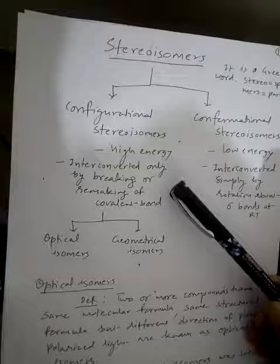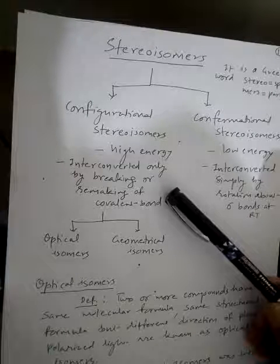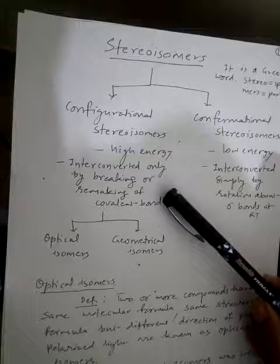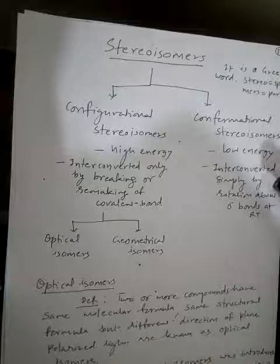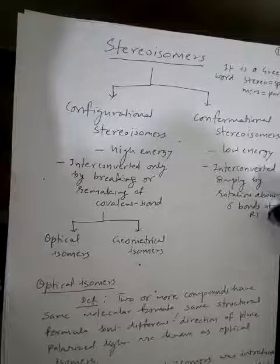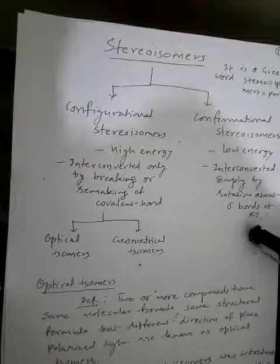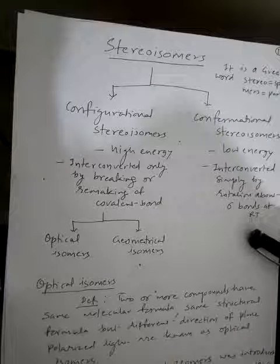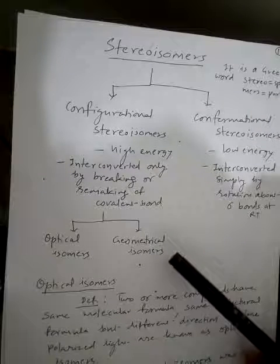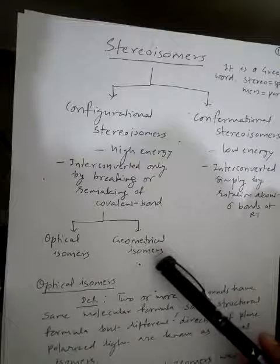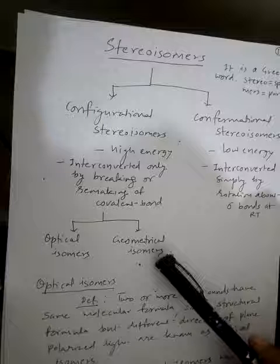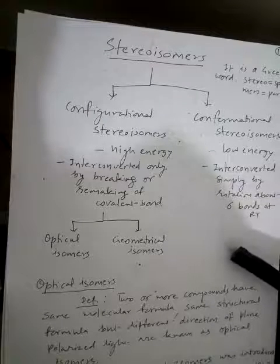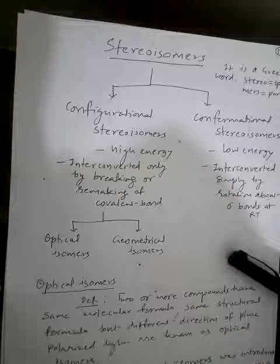Configurational stereoisomers are interconverted only by breaking or remaking of covalent bonds, whereas conformational isomers are interconverted simply by rotation about sigma bonds at room temperature. Configurational stereoisomers are further classified into two categories: optical isomers and geometrical isomers.